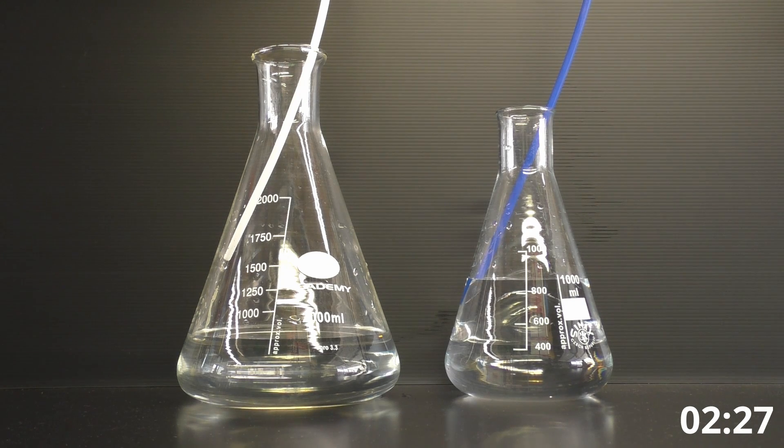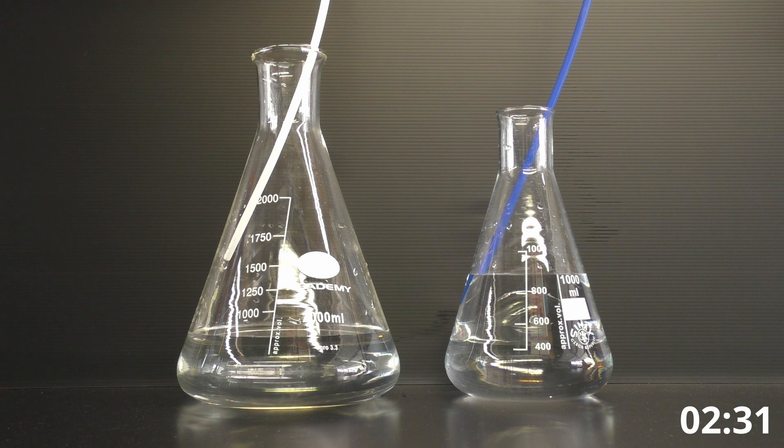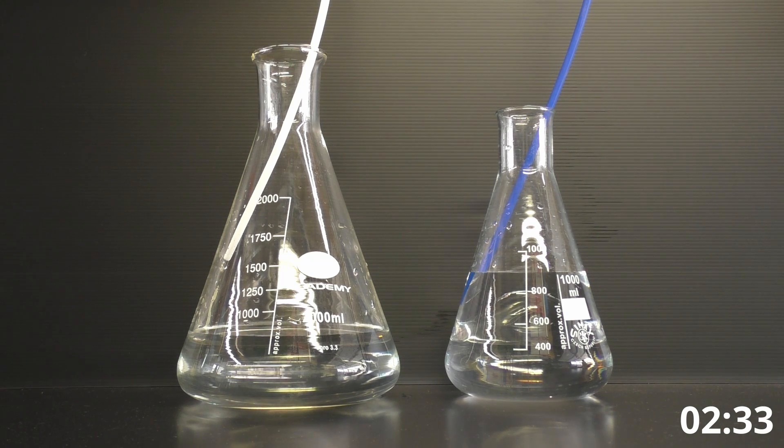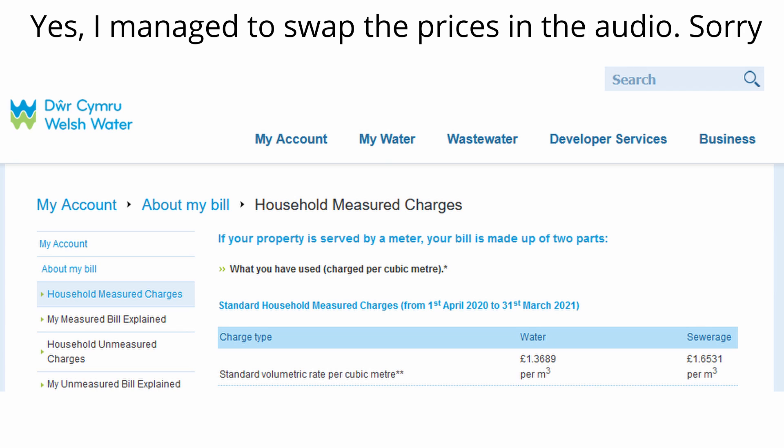That is a total of 54 litres used, which at current rates for Welsh water, water is 0.16p a litre. The sewage charge, which is also calculated on the metres cubed.